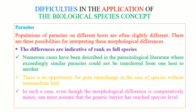When gene flow differences are indicative of full species rank, we look at the parasitological literature where exceedingly similar parasites could not be transferred from one host to another. They are specialized for that particular host and it is not possible to survive in another. There is no opportunity for gene interchange, especially in species without an intermediate host. Where there is an intermediate host, there can be some genetic flow. In such cases the morphological difference may be minor, but the genetic barrier is the point at which we deal with separate species.